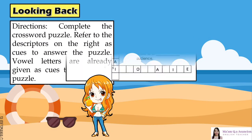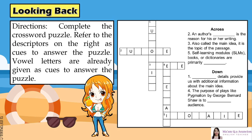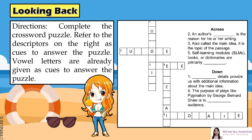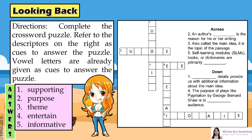Directions: Complete the crossword puzzle. Refer to the descriptors on the right as cues to answer the puzzle. Vowel letters are already given as cues. The answers are: 1. Supporting. 2. Purpose. 3. Theme. 4. Entertain. 5. Informative.